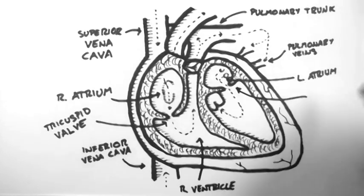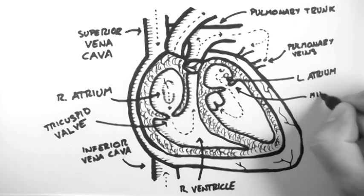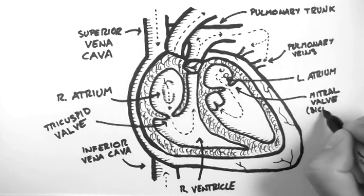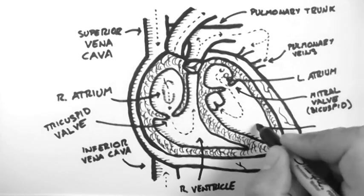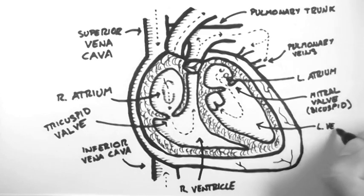Below the left atrium is the mitral valve, also known as the bicuspid valve, because it only has two cusps. Then it flows into the left ventricle, which is the main pumping chamber of the heart.